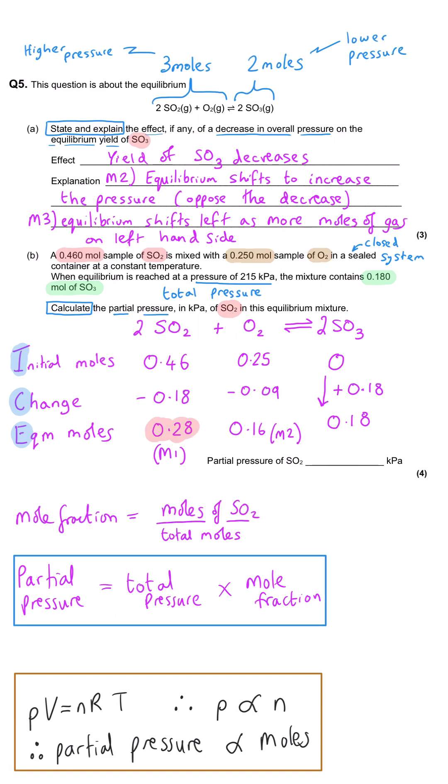And so what we're going to do is we're going to work out what our mole fraction is. And so to do that, we need to work out what the total equilibrium moles is by summing our 0.28, 0.16 and 0.18. And that gives us an answer of 0.62 moles. That will be mark point number three.